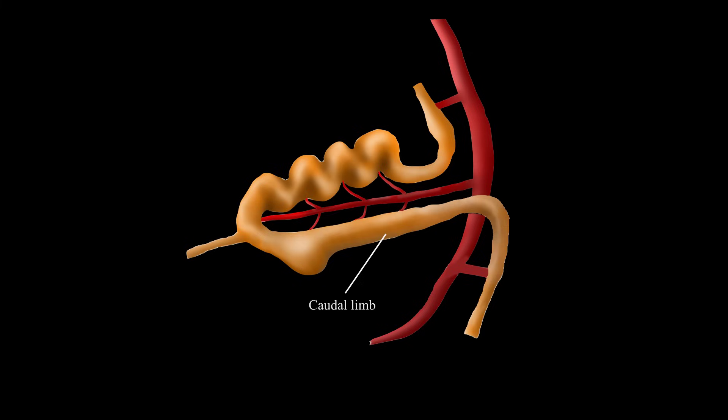The caudal limb of the mid-gut, now on the left side of the umbilical cord, grows a small cecal bud, ultimately becoming the cecum and appendix of the colon.